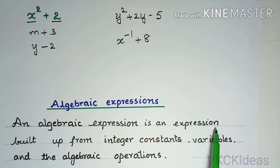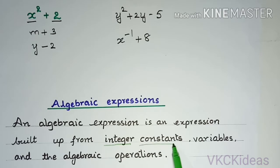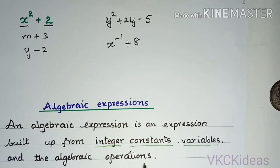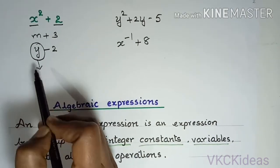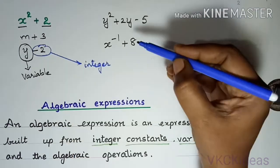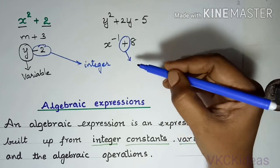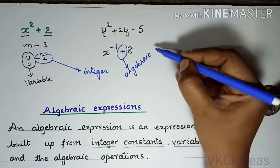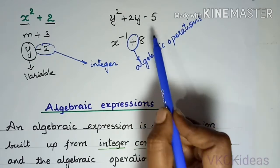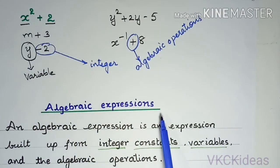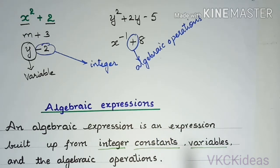An algebraic expression is an expression built up from integers, constants, variables, and algebraic operations. Just observe — there is a variable and there is an integer, and these integers are connected by some algebraic operations. Therefore these are considered to be algebraic expressions — these are nothing but expressing something algebraically.